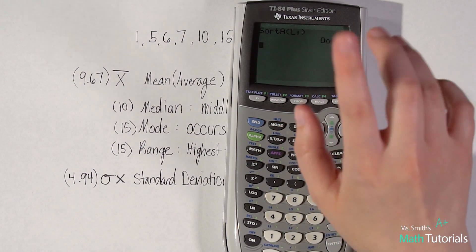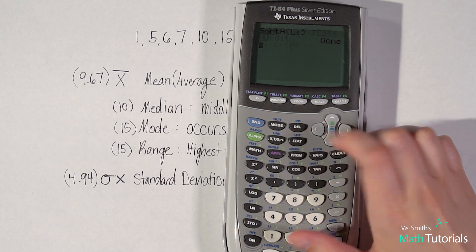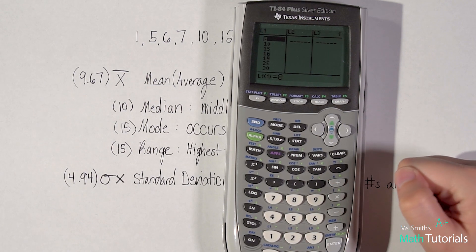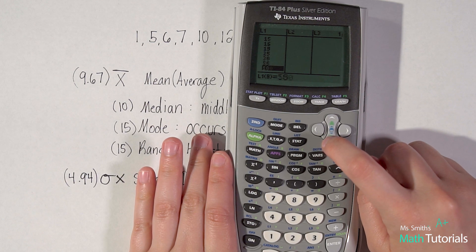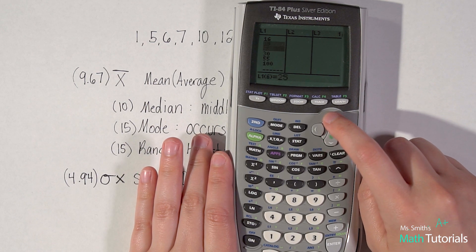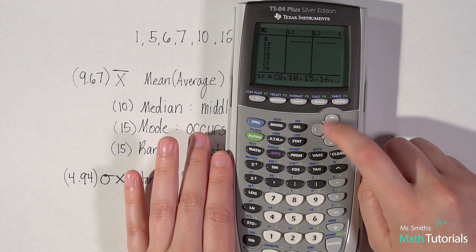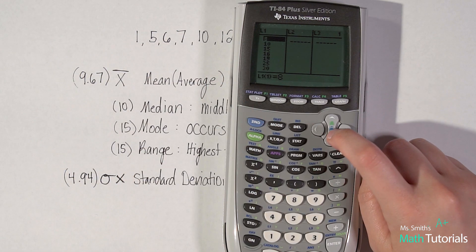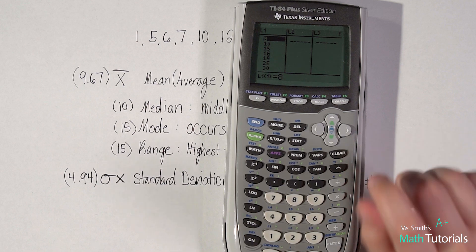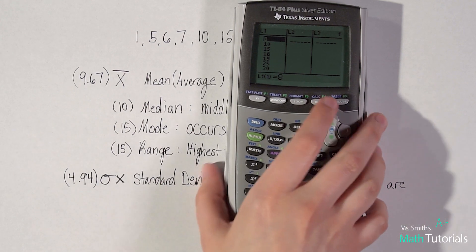So that's saying sort and ascending order are list one. Enter. And it says done. I love it. So let's go back and look at it. Stat, edit, and there's all those numbers I put in. And now they're in order. So I can very easily if I need to, you know, even if you're just copying them down from here, it'll save you a ton of time and a huge headache. So that's a good little trick to remember. All right.